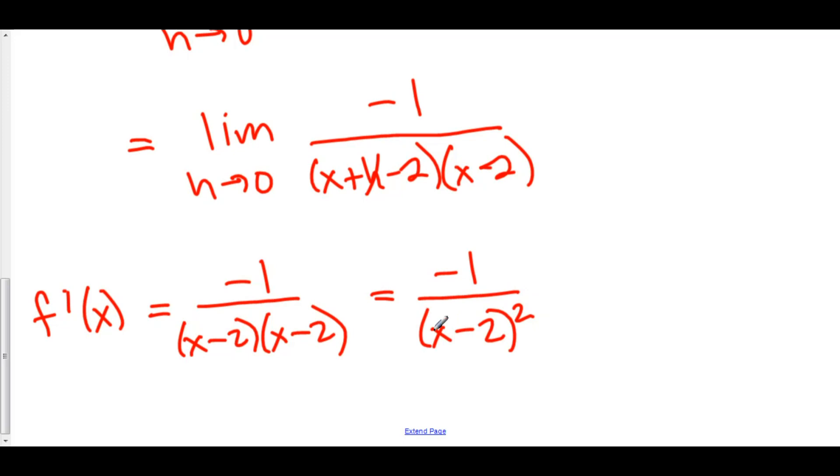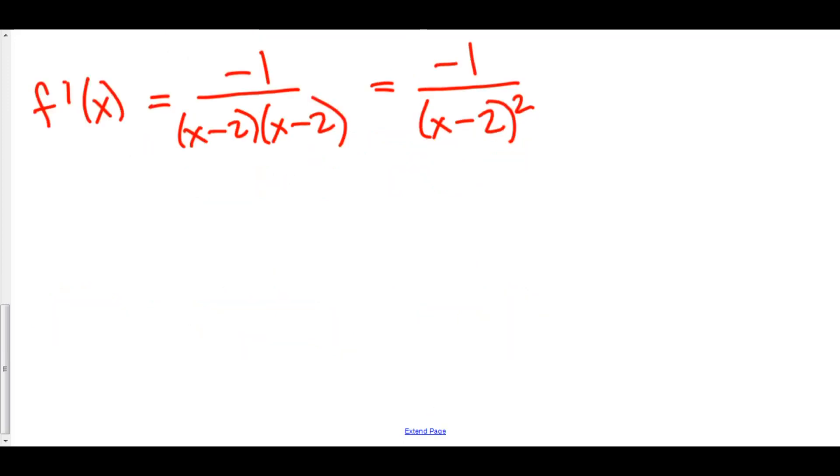Now, we are asked to find f prime of 3, which is the same thing as saying the slope of the tangent line to f at x equals 3. And here we just plug in 3. 3 minus 2 is 1 squared is 1 and negative 1 over 1 is negative 1. And so the slope of the tangent line to f at x equals 3 is equal to negative 1.